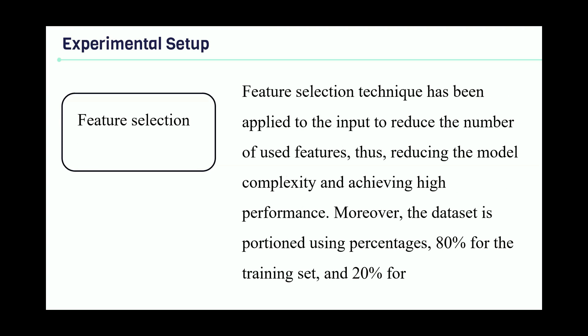Then we will go with a different technique, which is applying feature selection. Feature selection in the machine learning world means that you have applied input to reduce the number of used features, reducing the model complexity. And that can help you achieve high performance. Therefore, the dataset we use here in this work, we try to divide it between two parts. First part for 80% for training and the second part for 20% for testing.